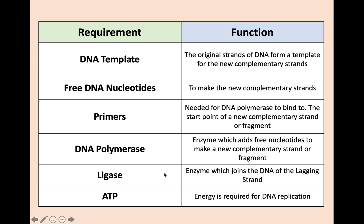This slide gives an overview of the requirements for DNA replication, in case you're asked in the exam. You have your original DNA template, and you add free DNA nucleotides to make the new complementary strands. You need primers to start the process. DNA polymerase is the enzyme that adds free nucleotides to make a new complementary strand. On the lagging strand, ligase joins the DNA fragments together. Finally, ATP is also required, because energy is needed throughout the process.